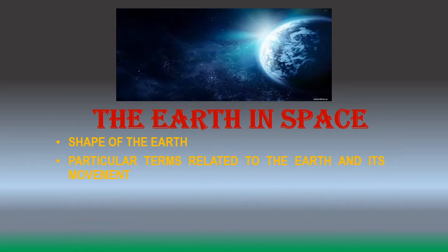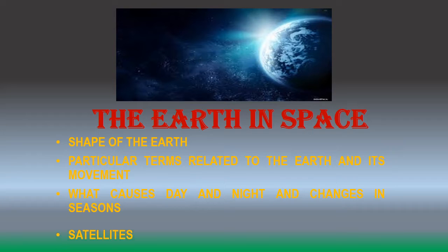Number 2, particular terms related to the earth and its movement. Number 3, what causes day and night and changes in seasons. Number 4, what are satellites. Number 5, what are orbits. So students, before starting the chapter, here are the meanings of some terms and words that you should know.